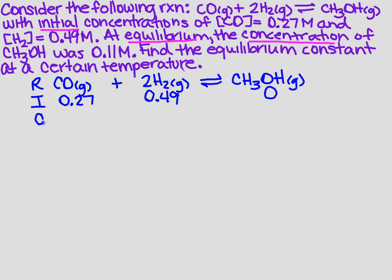And then we've got C, so that's going to be your change. Now how much did it change? Well, we're not exactly sure yet, but we know that at equilibrium what the product was. So I'm going to come down here for equilibrium. And I know that the equilibrium, the CH3OH, was 0.11. Well, 0 plus what gives me 0.11? It gives me positive 0.11.